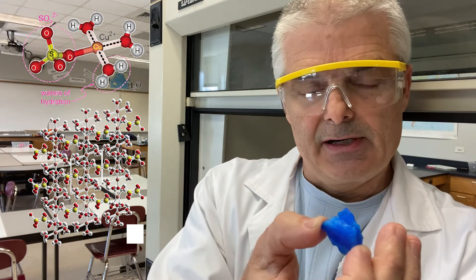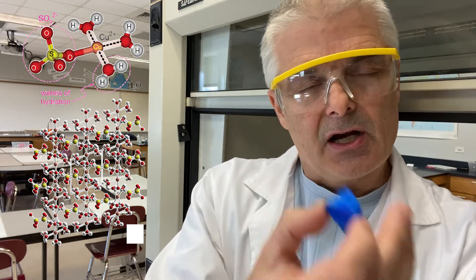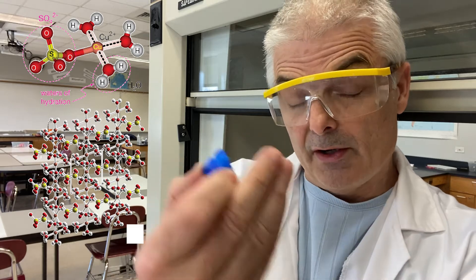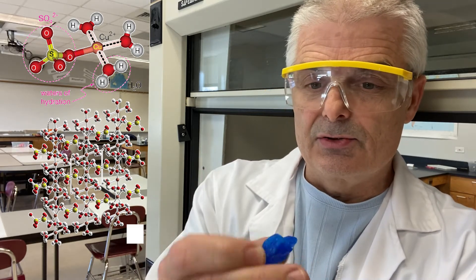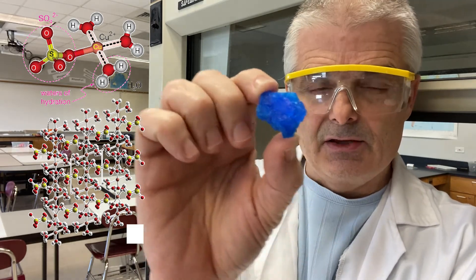Check out the image that you're looking at right now. That's the structure of copper sulfate pentahydrate. That means there's five waters that are connected to the copper. And so you can see this crystalline structure.